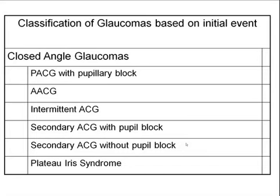This can happen chronically. If the pressure elevation is sudden, it can result in acute angle closure glaucoma. Intermittent angle closure glaucoma involves occasional episodes of elevated IOP, most commonly with pupillary block, causing damage over time from these intermittent episodes. Patients typically complain of occasional headaches and brow pain, possibly with blurred vision, and you may see PAS on examining the angle.